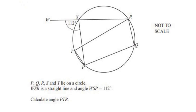Hello and welcome to my channel. In this video we are going to solve an example on circle theorems. The question is: P, Q, R, S, and T lie on a circle — five points lying on the circle — and WSR is a straight line, and angle WSP is given as 112 degrees.